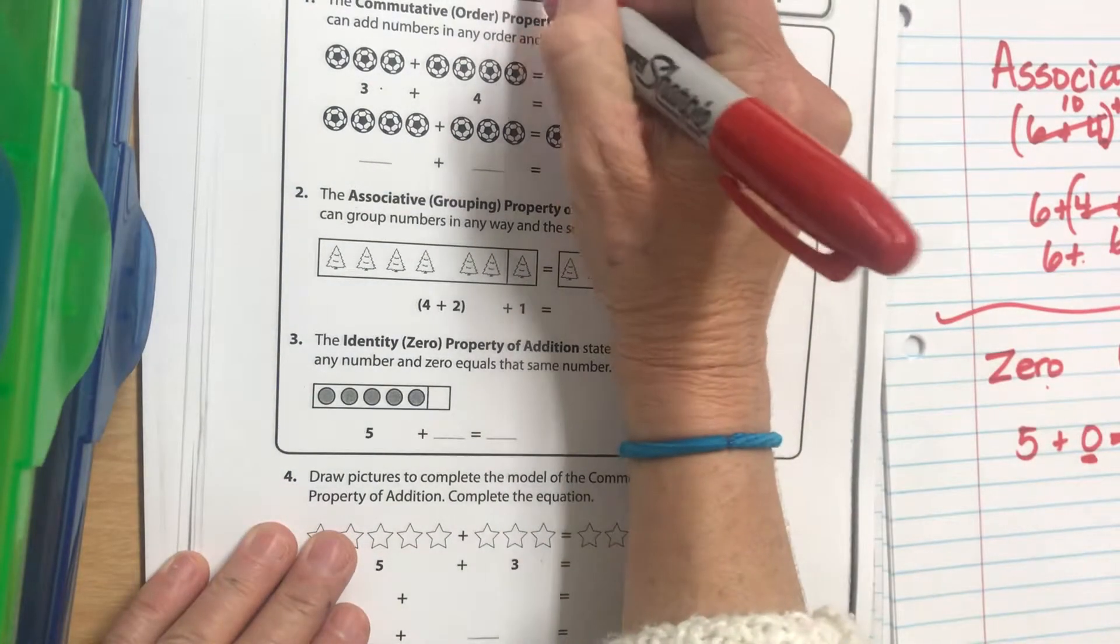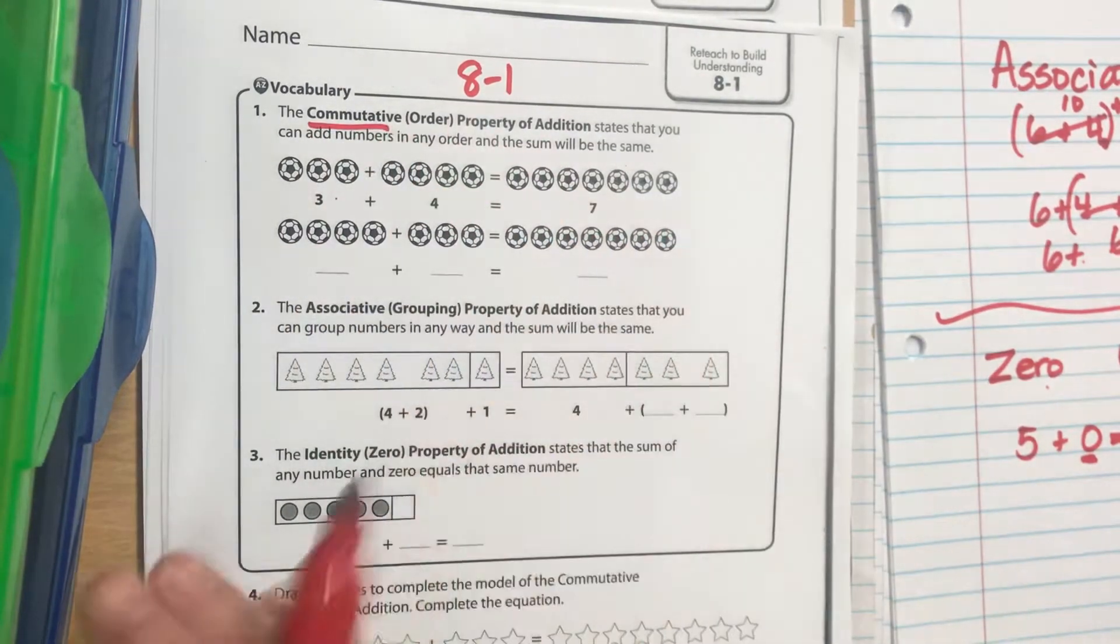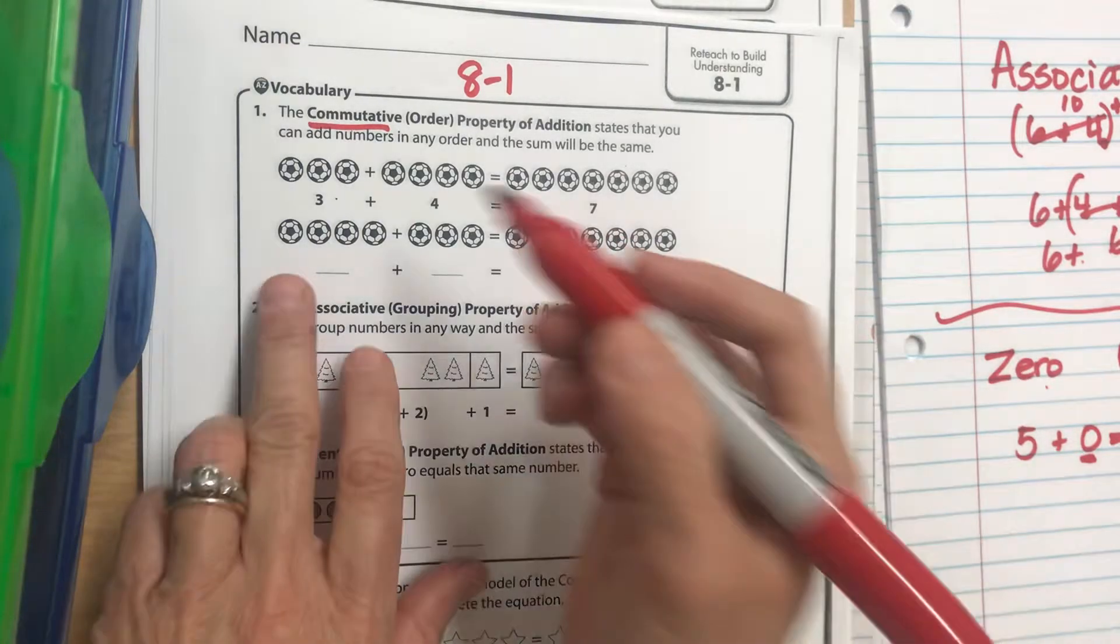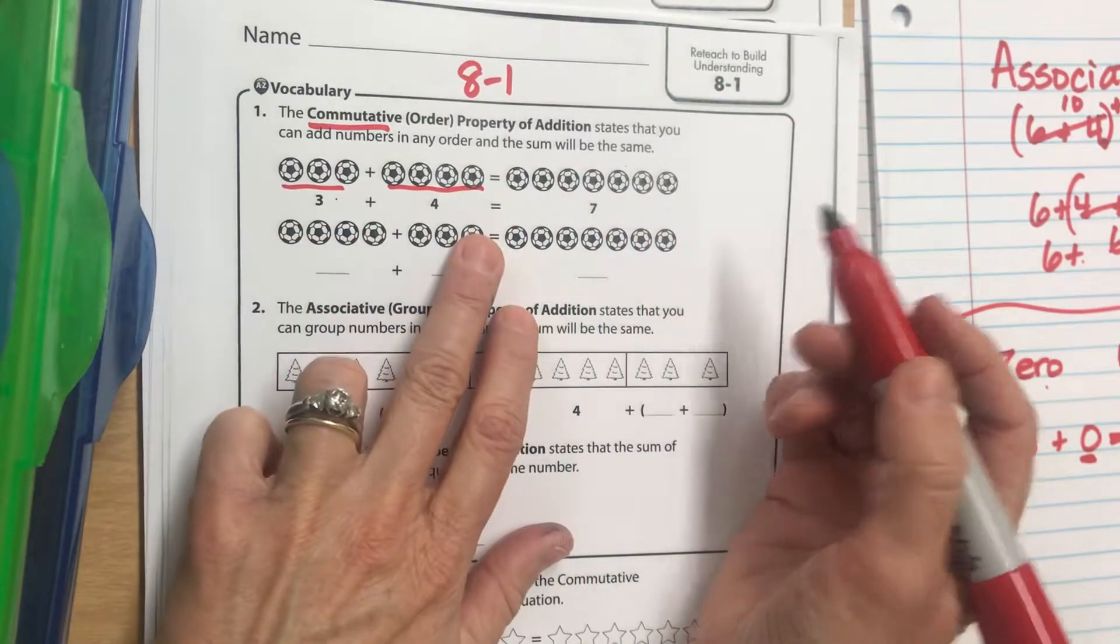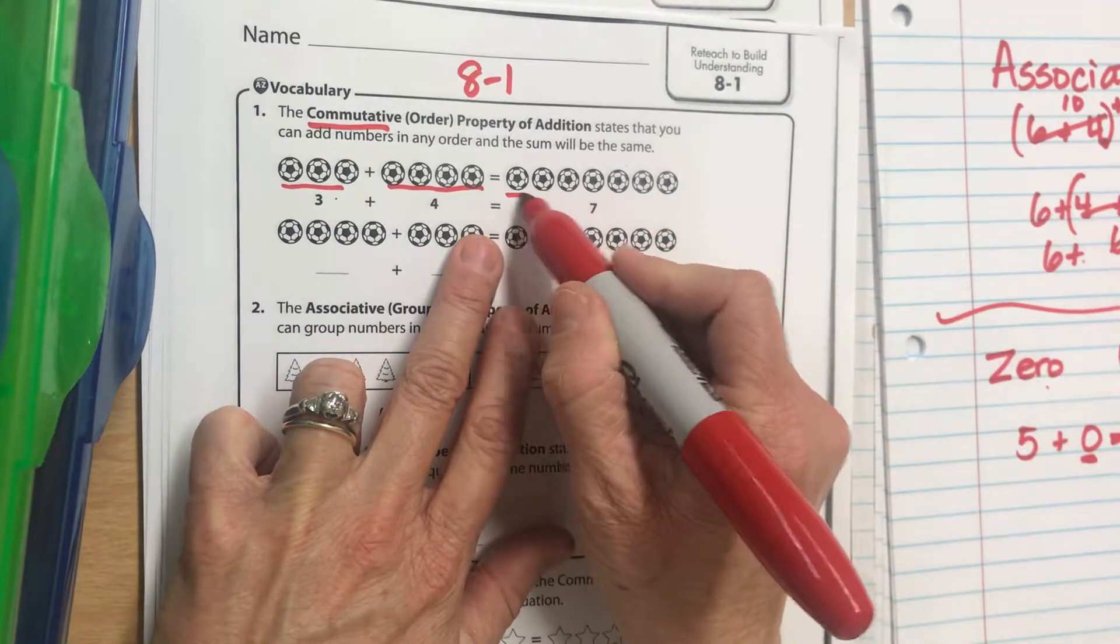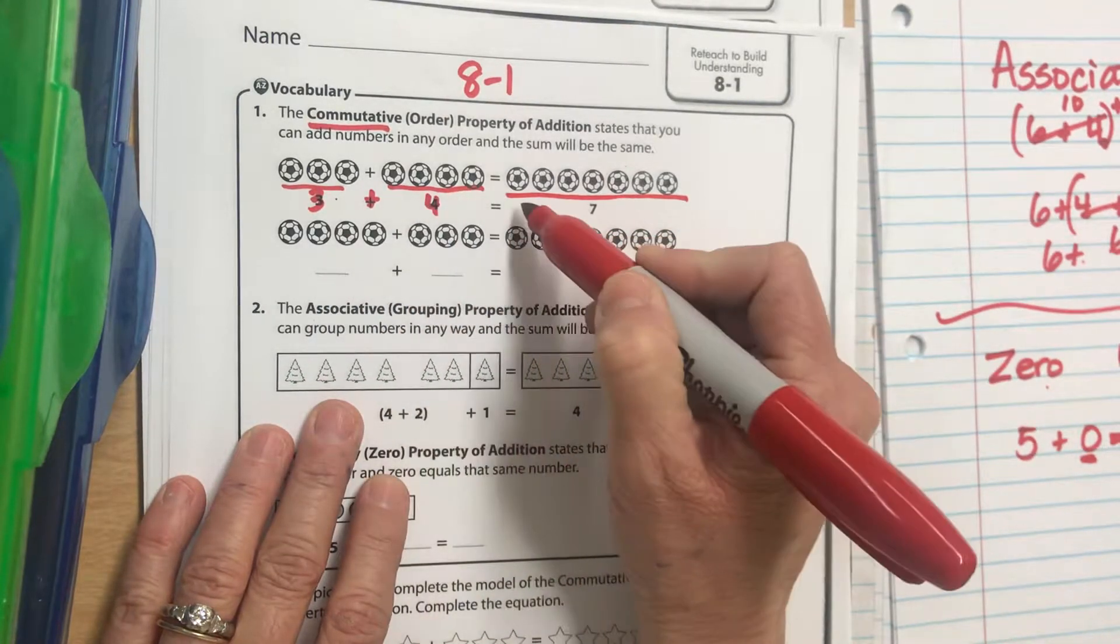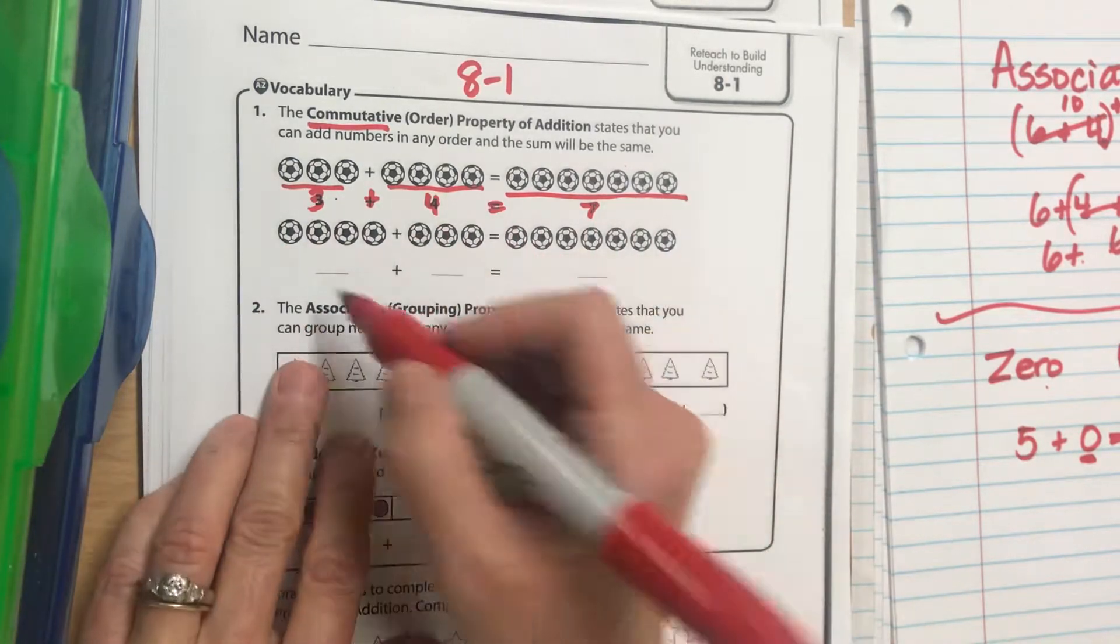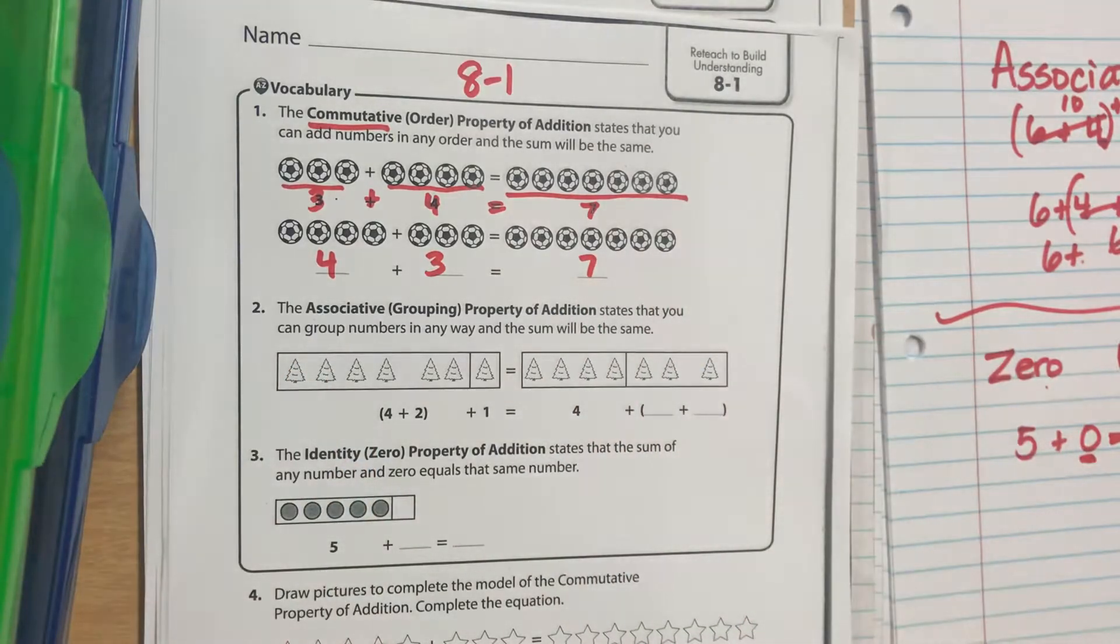This is 8-1. Commutative means home to work, work to home - I can add the numbers in any order and the sum will be the same. So I can do 3 plus 4 equals a total of 7, or I can switch them around and go 4 plus 3, and yes, that's still going to equal 7.